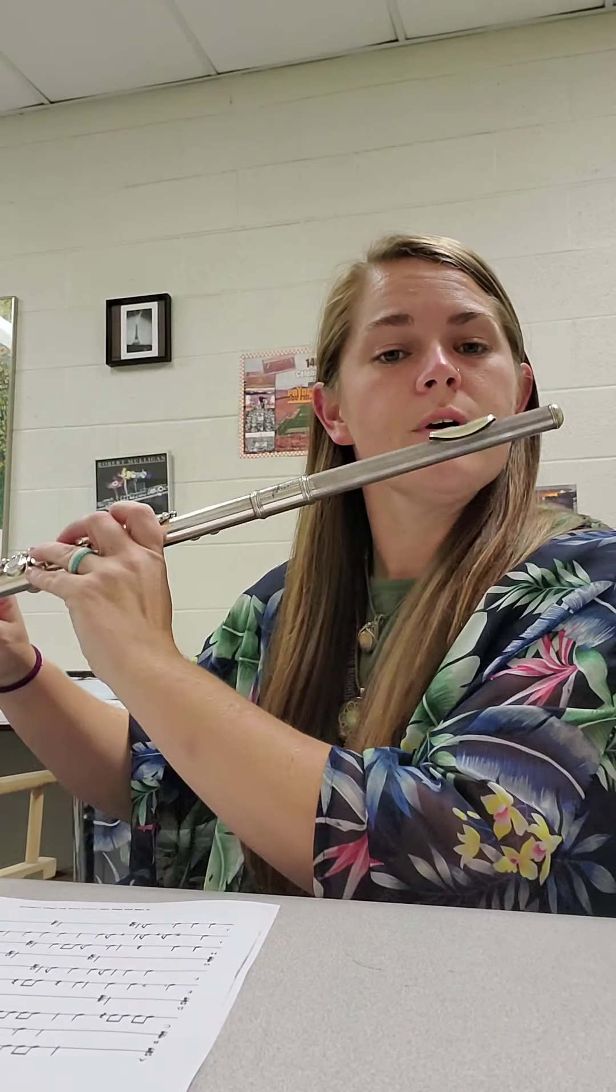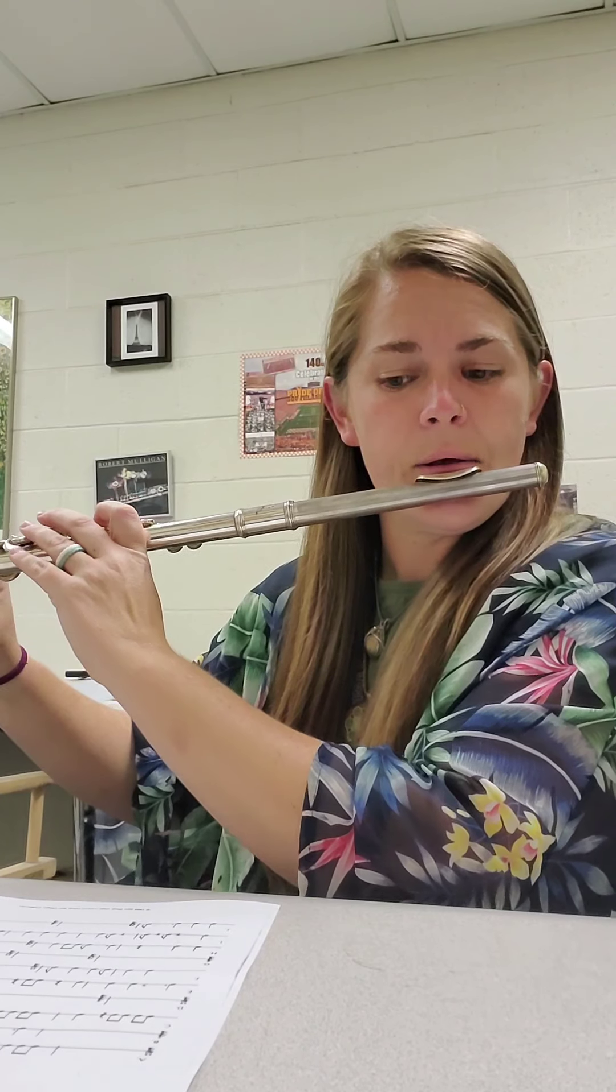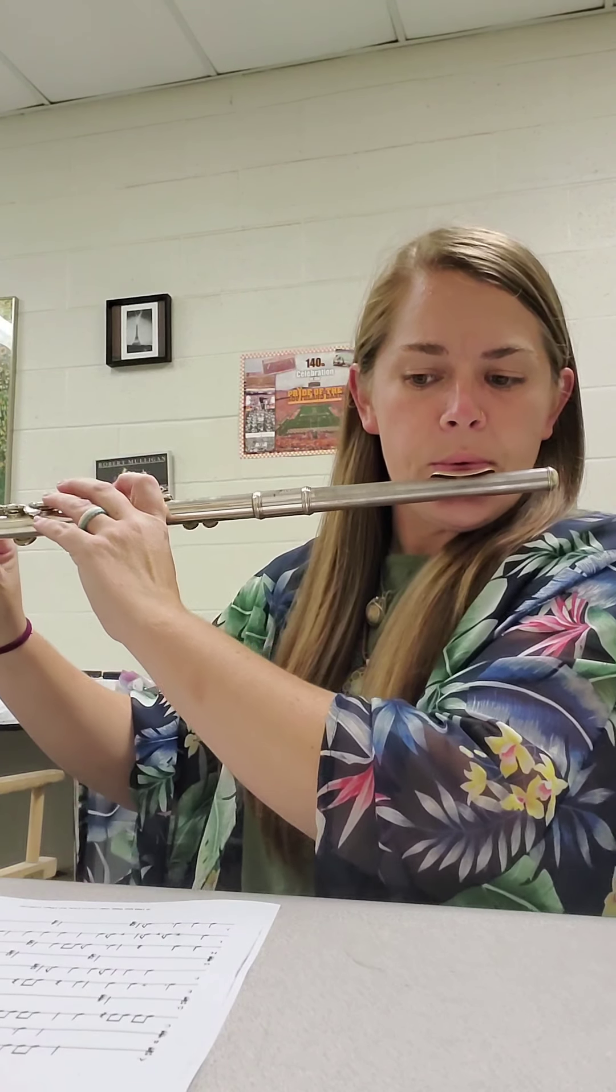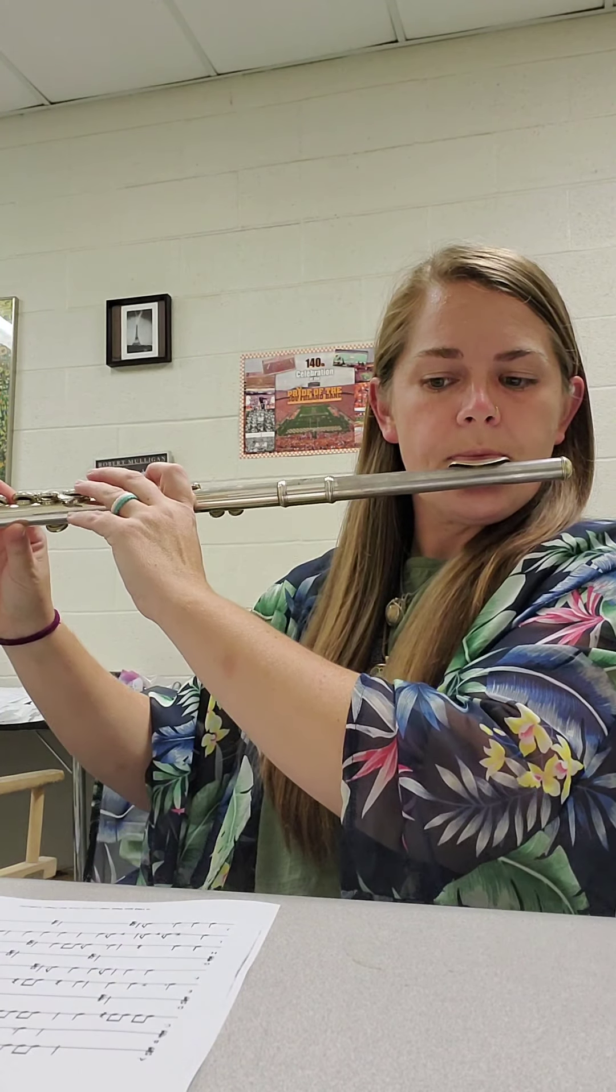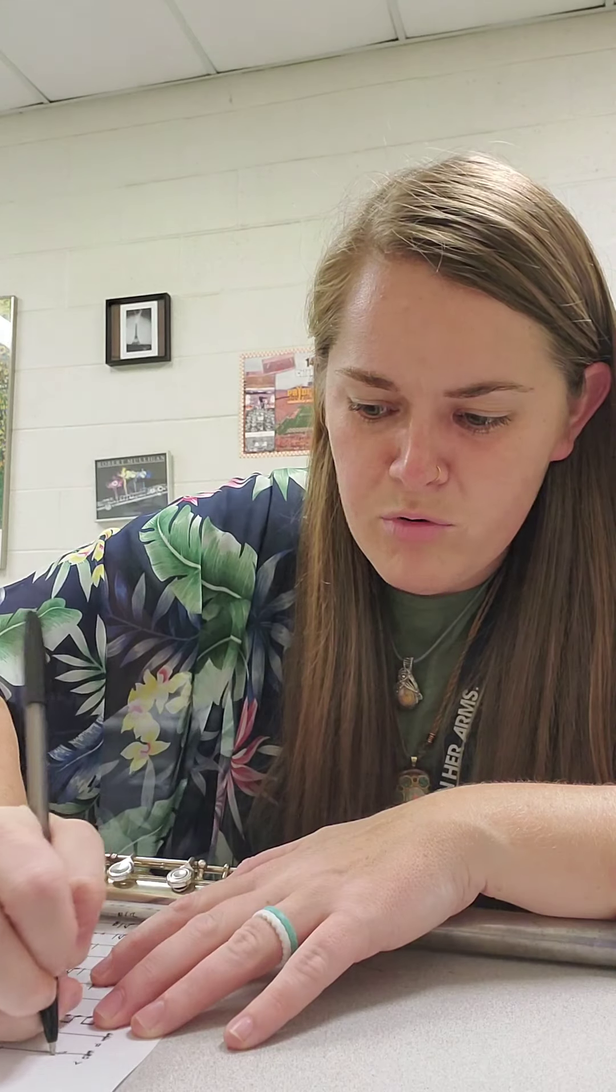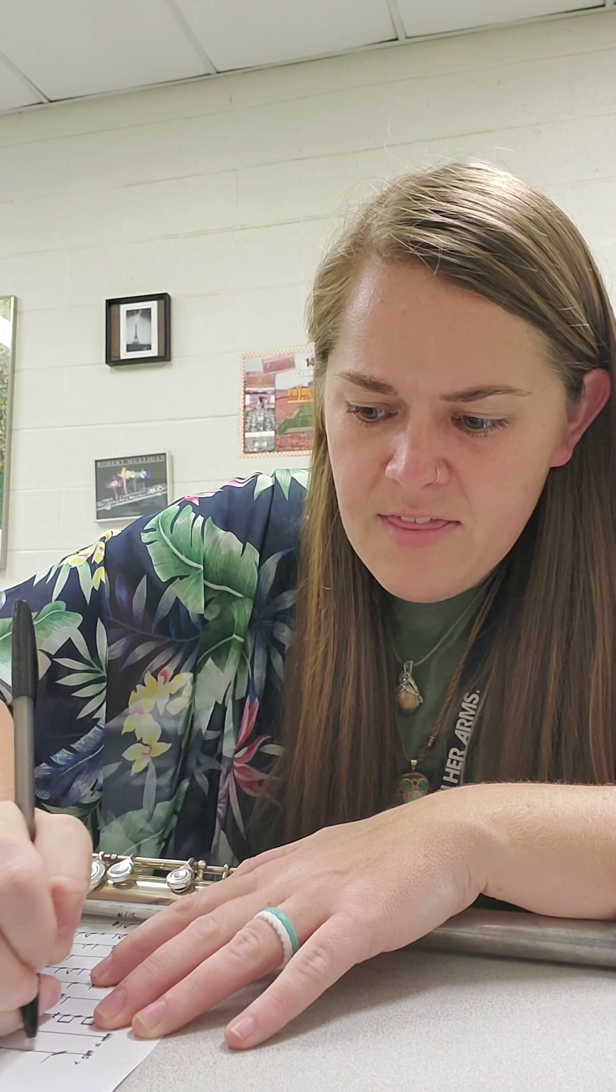I'm going to do measure 1 again. 1, 2, and 1, and. Alright, write down what you got in measure 1. I'm going to write it down so I can remember it. And then as you look at the second measure of line A, you'll notice there is no time signature in that measure. I want you to look at the number of beats in that measure and decide what the time signature is and write that in in measure 2.